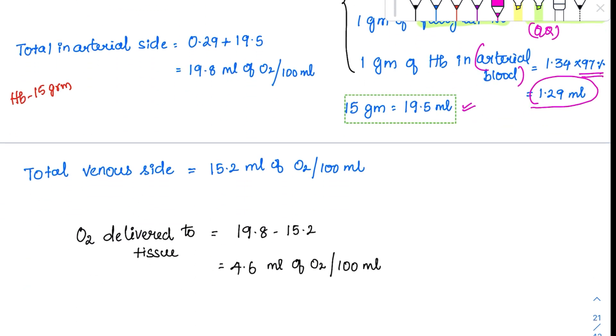So the total which is carried in the arterial side will be an addition of 0.29 and 19.5, which is 19.8 ml of O2 per 100 ml. When you do the same exact calculation for the venous system, the venous system is going to carry 15.2 ml of O2 per 100 ml. So how much will be delivered to the tissue? Whatever is subtracted, that should have been delivered to the tissue. So O2 delivery to tissue will be 4.6 ml of O2 per 100 ml. So remember all these values.